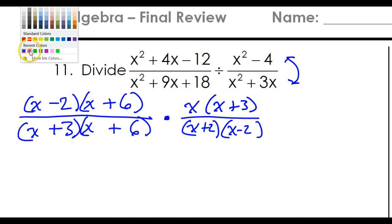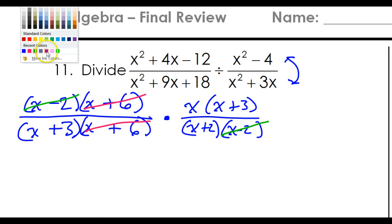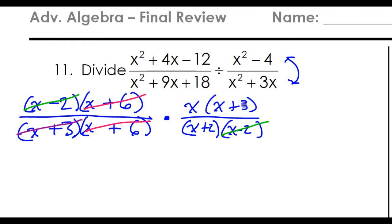So now I'm looking to see what in the world is going to cancel out. Well, the x plus 6s, they're going to cancel out. Anything else? Maybe I'll use different colors. This x minus 2 and this x minus 2 over there, they're going to cancel out. Anything else? Well, how about purple? This x plus 3 and this x plus 3. Anything that's high and low are going to cancel out. So what's left? The only thing that's left is the x and the x plus 2. So that's going to really be the form of my answer.